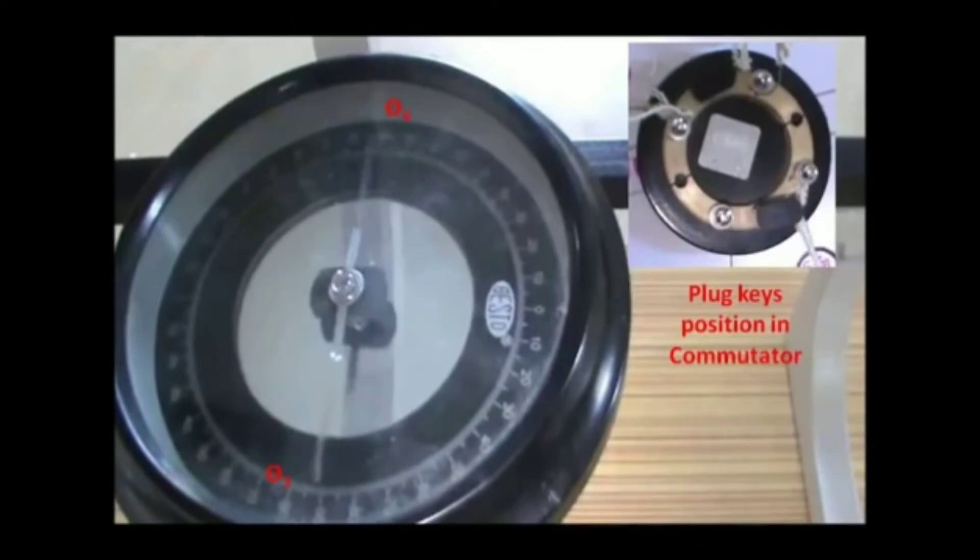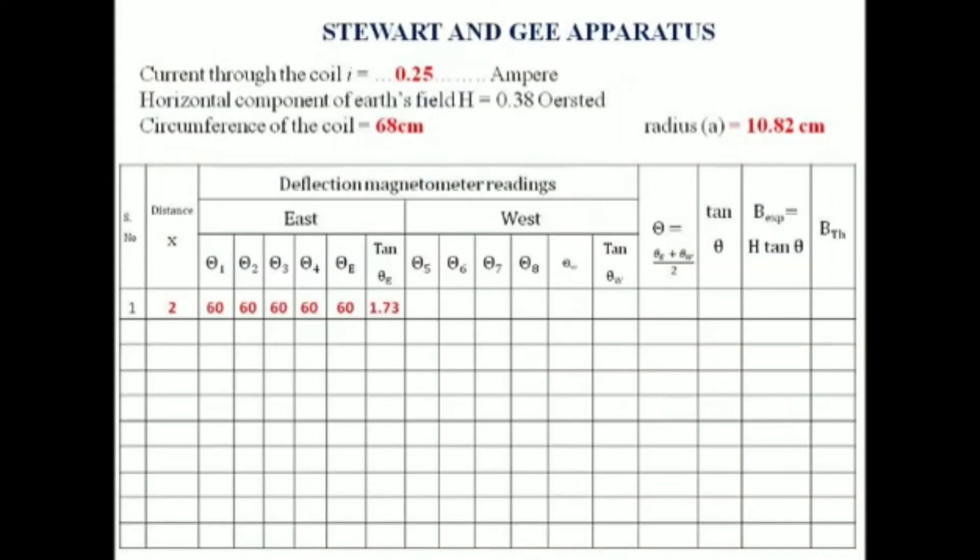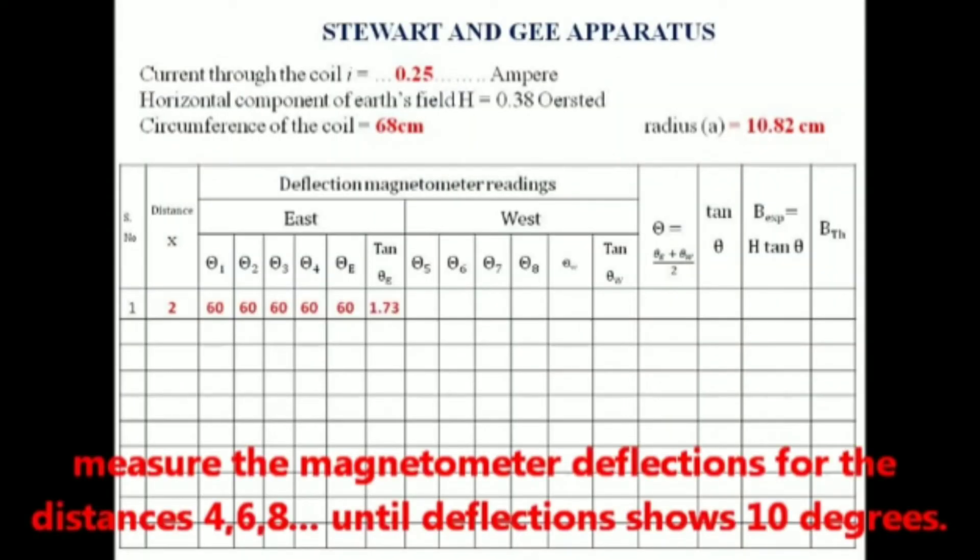Measure the magnetometer deflections for the distances 4, 6, 8 cm until deflection reaches 10 degrees.